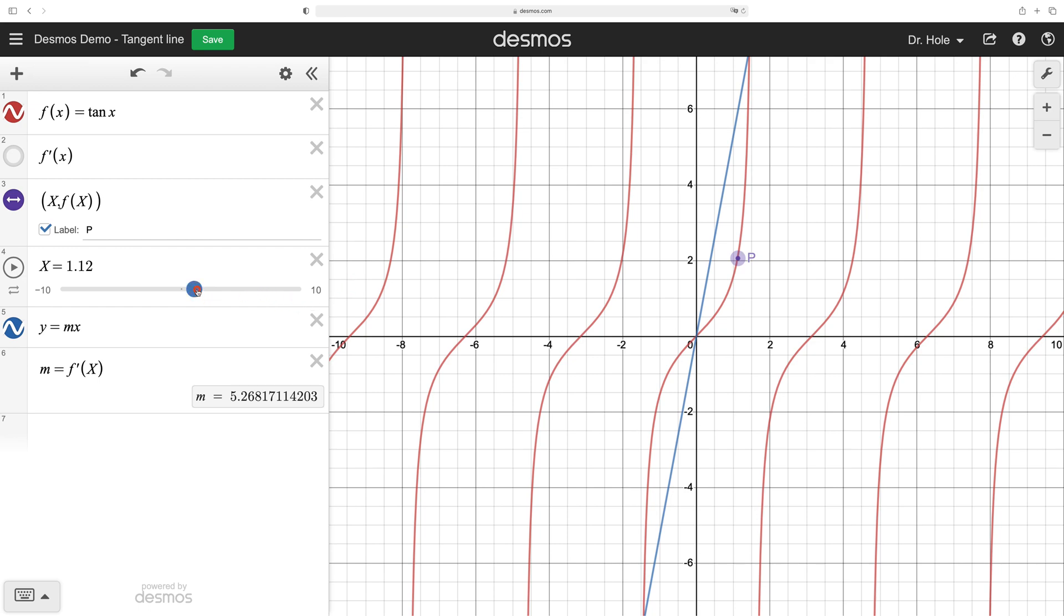I can also adjust the position of P by changing the value of x directly. Okay. So our blue line has slope matching the slope at the point P, but our blue line does not pass through the point P for most values of input X. Let's remedy that.